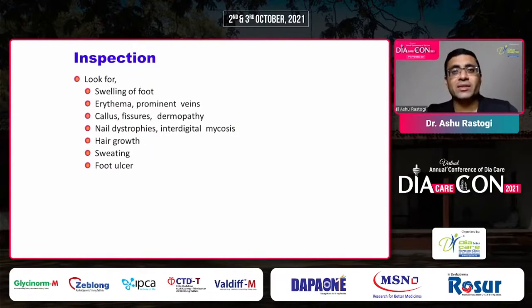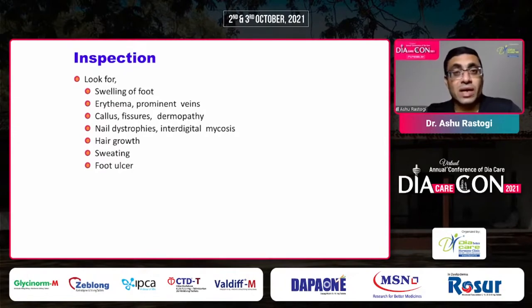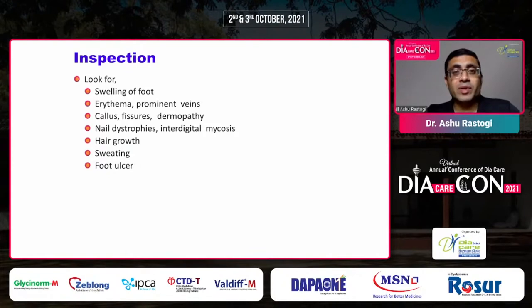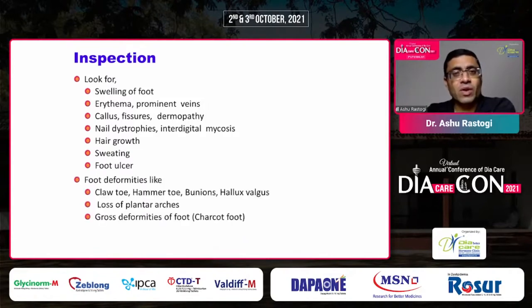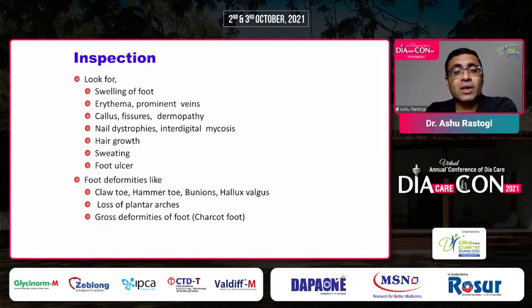Look for swelling of the foot and any prominent callus — these are the first tell-tale signs of future foot ulcers. Check for nail dystrophies or interdigital mycosis, as the interdigital space is the most common site for the occurrence of foot ulcers. Look for loss of hair growth, which may indicate ischemia, and for dry skin due to sudomotor dysfunction in autonomic neuropathy.